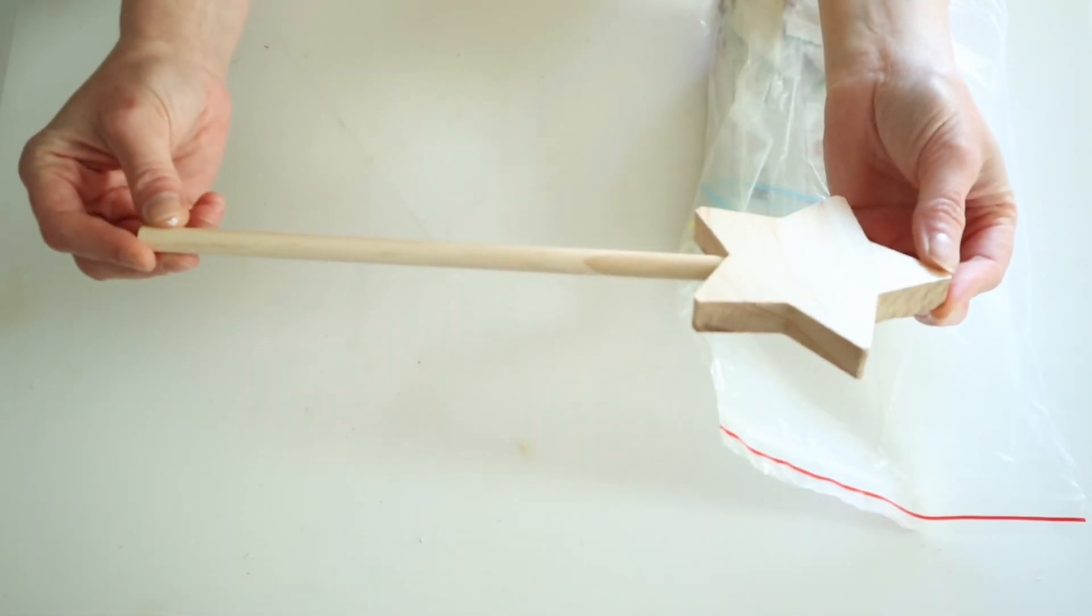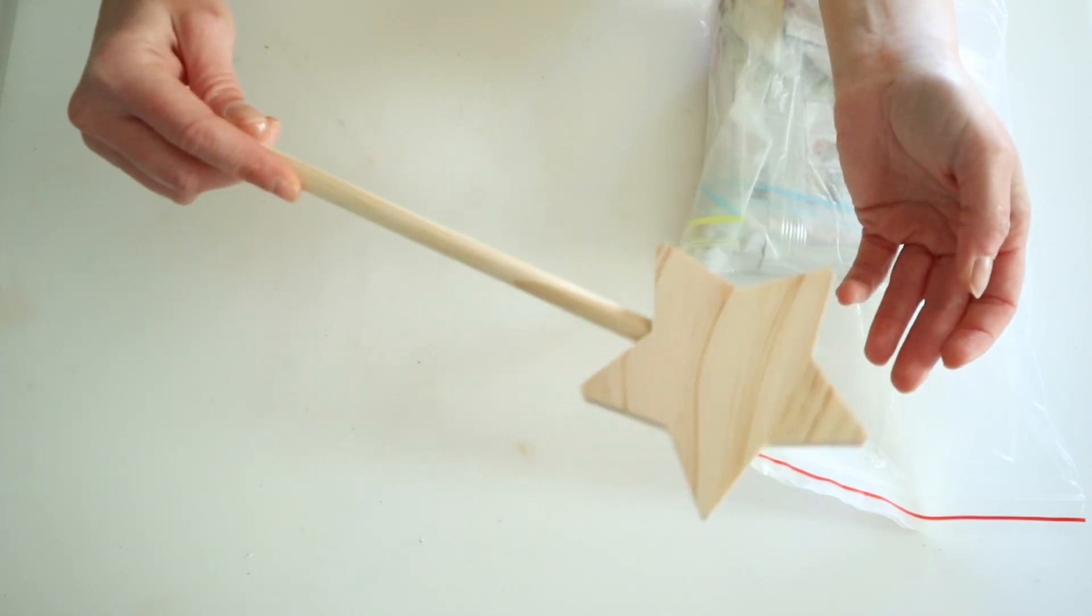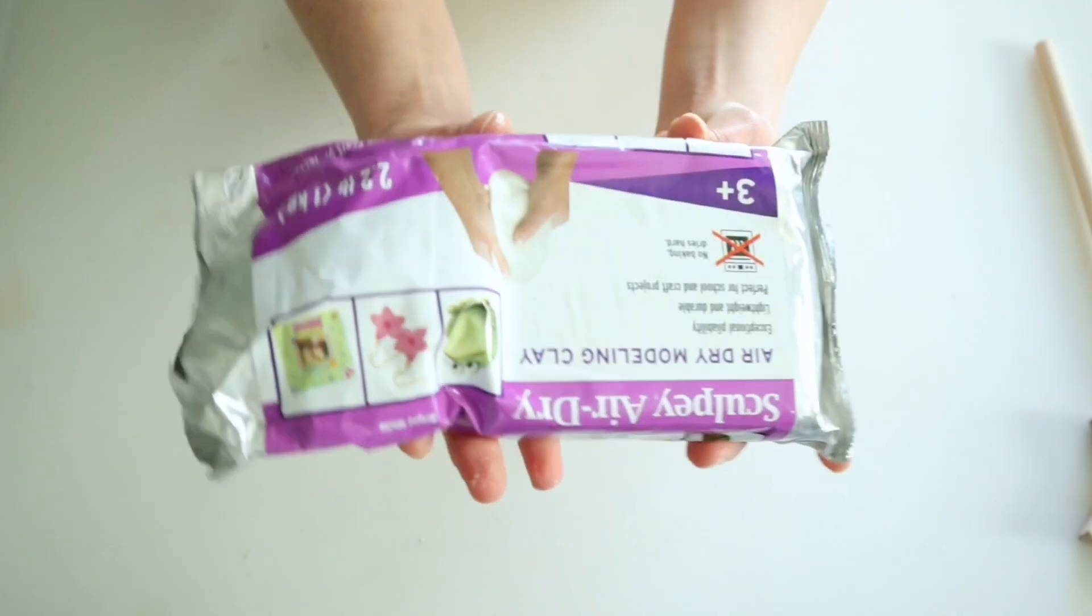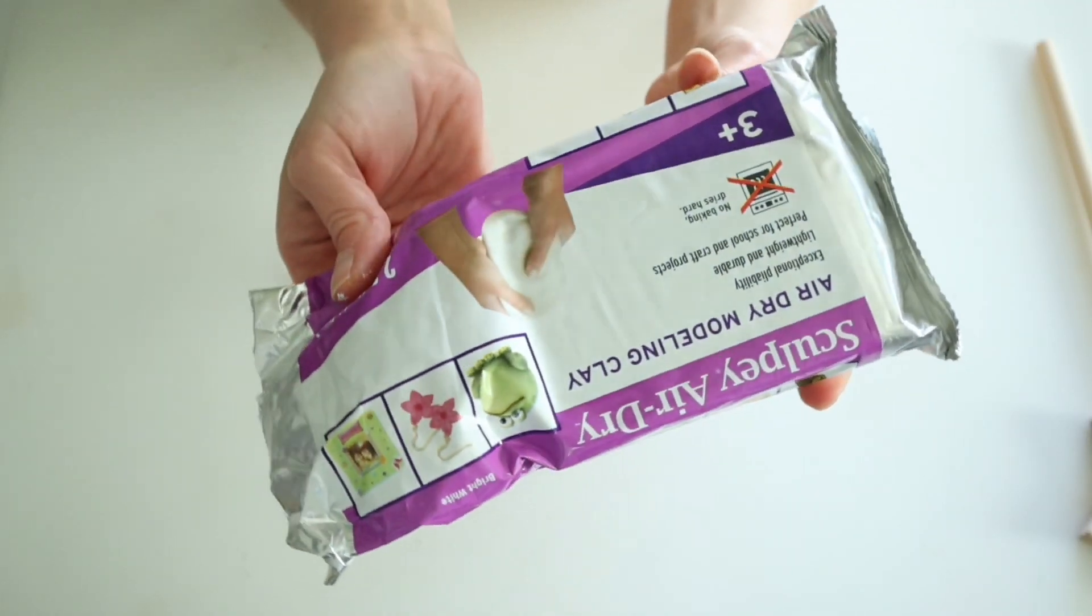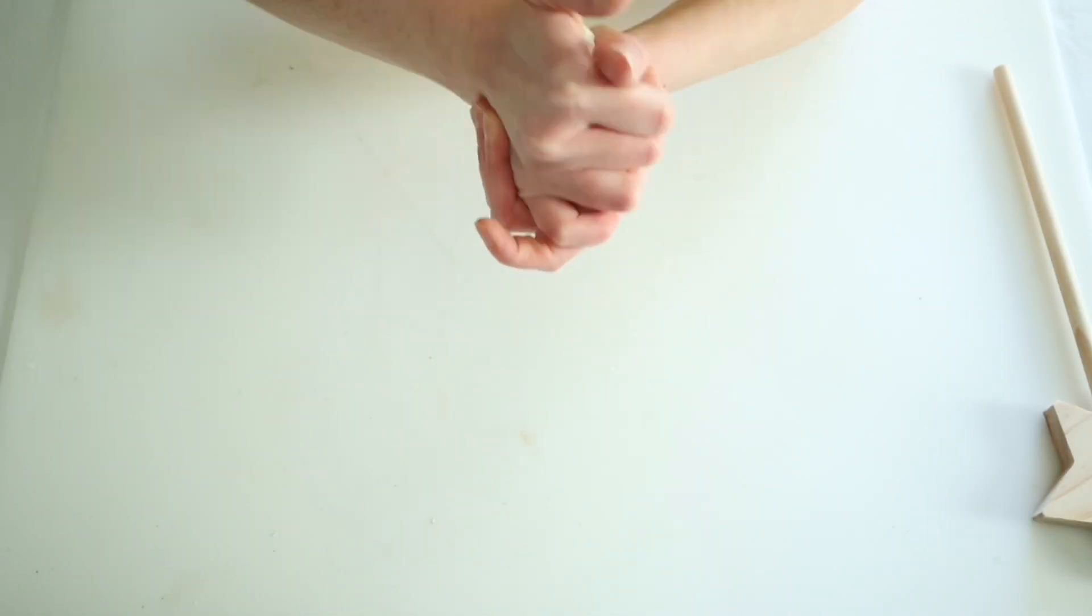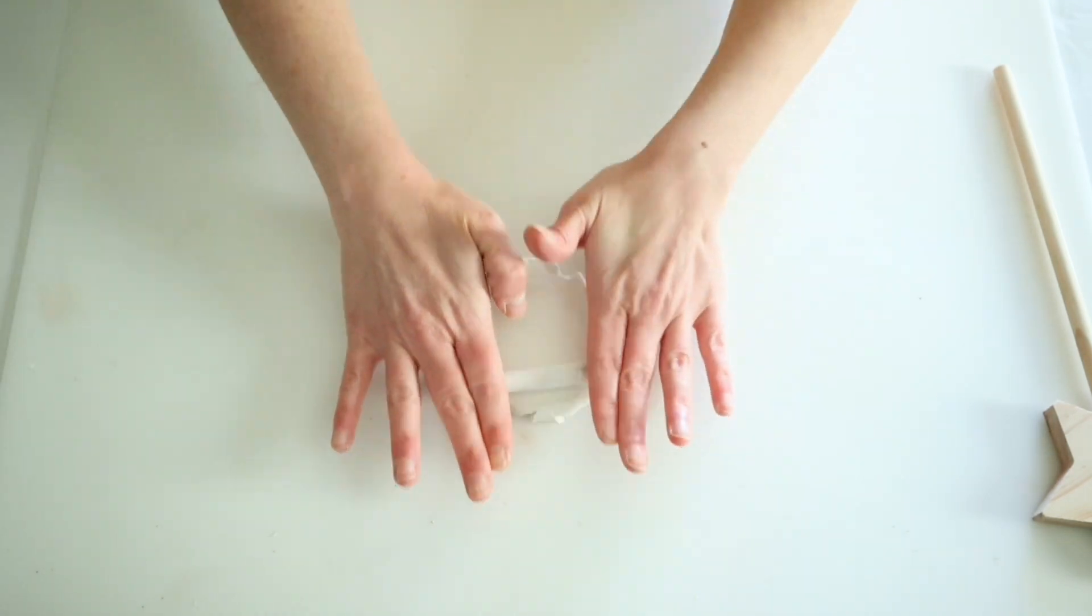For this project, I picked up this star dowel from Dollar Tree. I'm pretty sure it's supposed to be a wand, but I'm going to use it for Christmas decorations. So the first thing I did was grab some of my air dry clay. Of course, I have everything linked below for you that I'm using today.